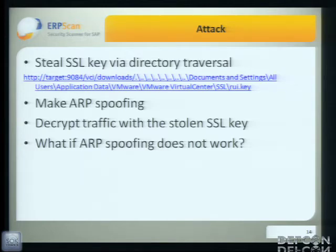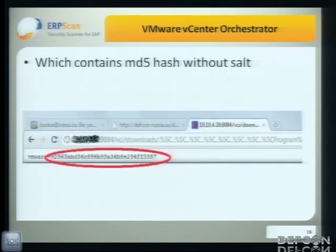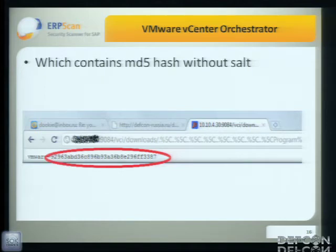But what if ARP spoofing doesn't work? We did a little analysis and found vCenter Orchestrator. It's software for automatic configuration and management of vCenter, and it's bundled by default with vCenter. It has interesting files like gate.etc and password.properties, each containing MD5 hashes without salt. Nowadays that's not very secure. So of course we brute forced them and gained control.